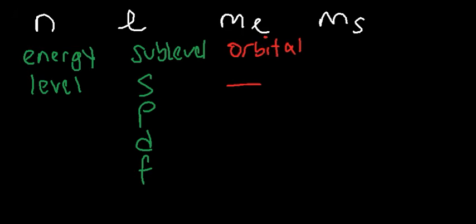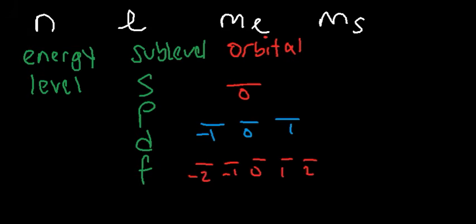S has one orbital and ML has a value of zero. P has three orbitals, and ML has values of negative one, zero, and one. D has five orbitals, which varies between negative two and two. MS represents the electron spin — inside an orbital, you can have an up arrow which stands for plus one half, or a down arrow which has an electron spin of negative one half.